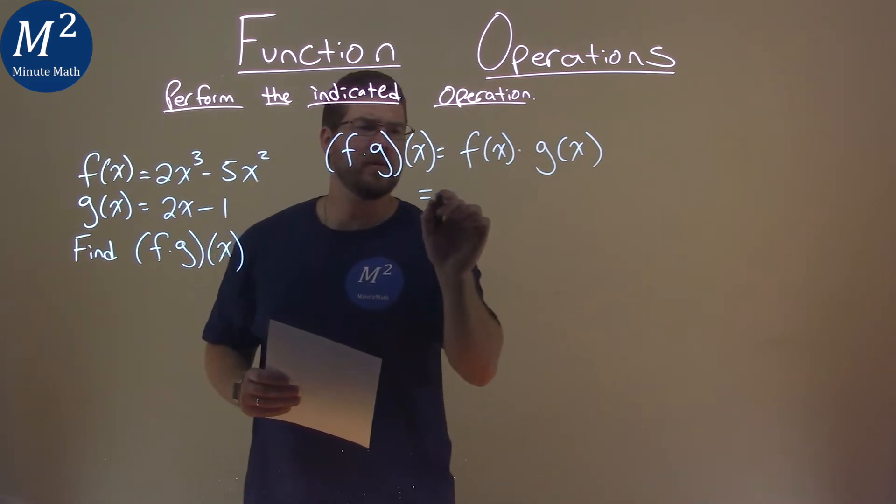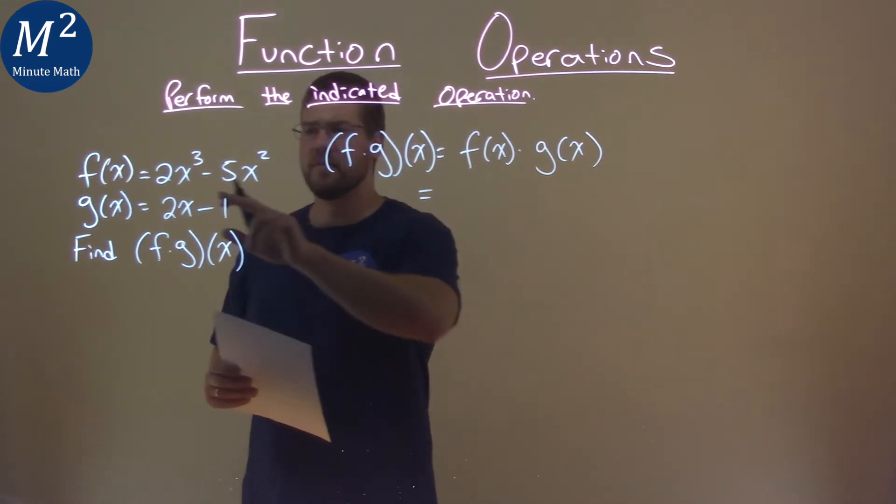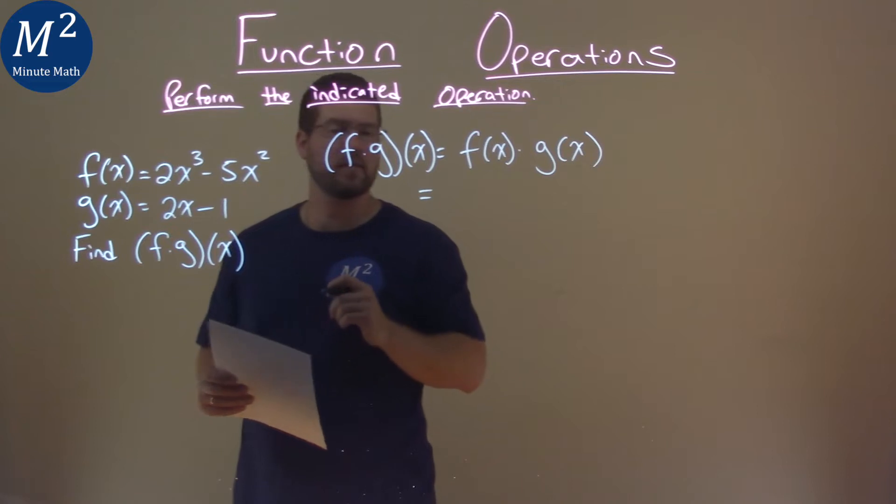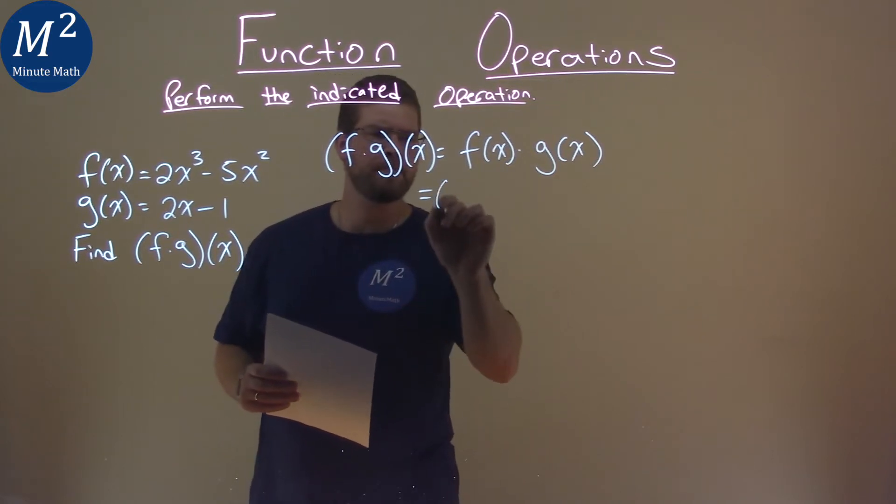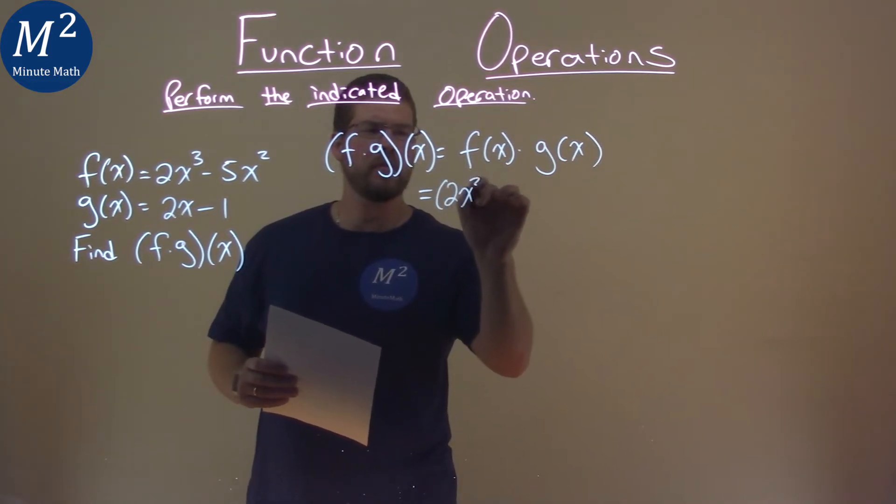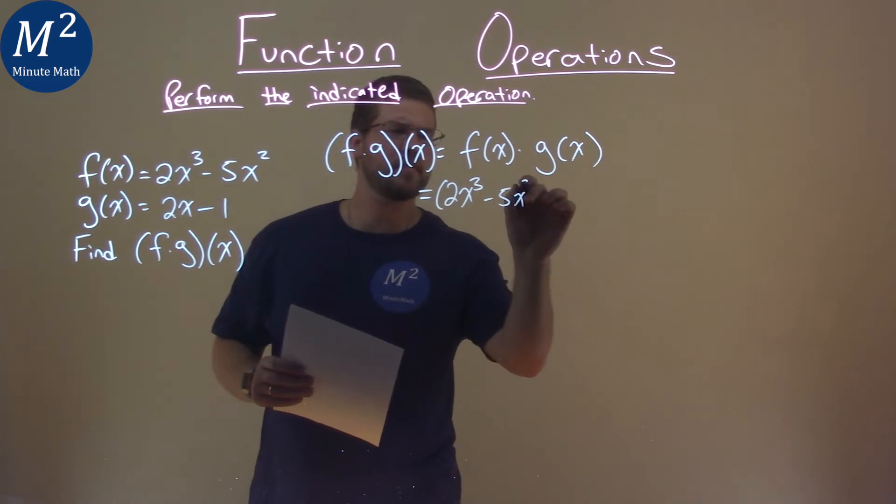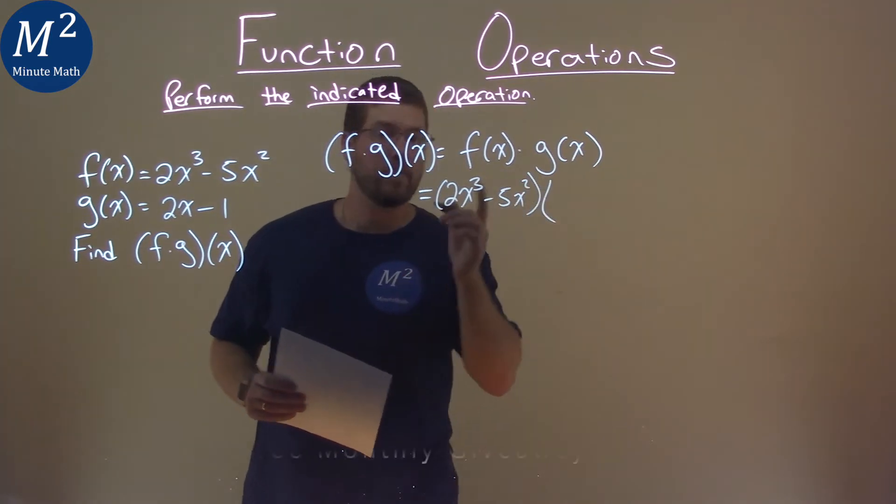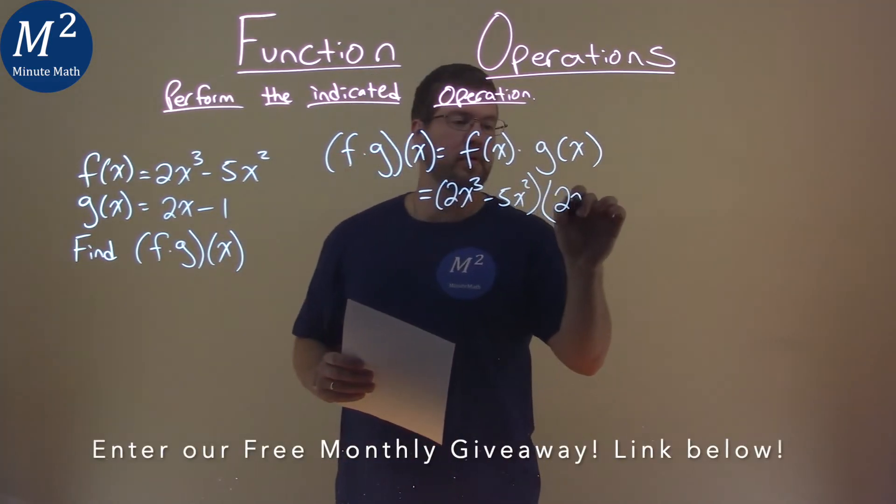So, now what we want to do is, well, we know f of x is 2x to the third minus 5x squared. Let's plug it in. 2x to the third minus 5x squared. Same thing with g of x, which we know is 2x minus 1.